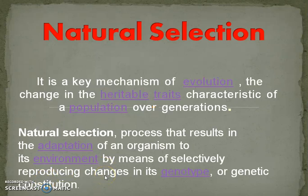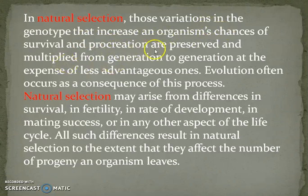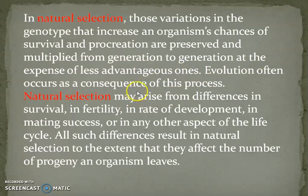Natural selection involves non-random mating. Through variations in the genotype, traits that increase an organism's chances of survival and procreation are preserved and multiplied from generation to generation at the expense of less advantageous ones. Evolution often occurs as a consequence of this process.